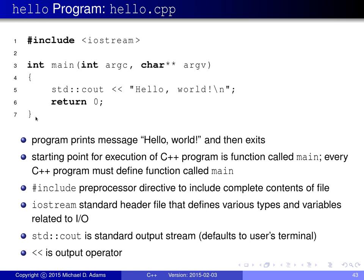Looking at the program in a bit more detail, the very first line has what's called a preprocessor directive — an include directive. This is saying there's another file called iostream, and essentially we want to insert the entire contents of that file in place of the first line of code; it inserts the lines of code from another file into this particular file.